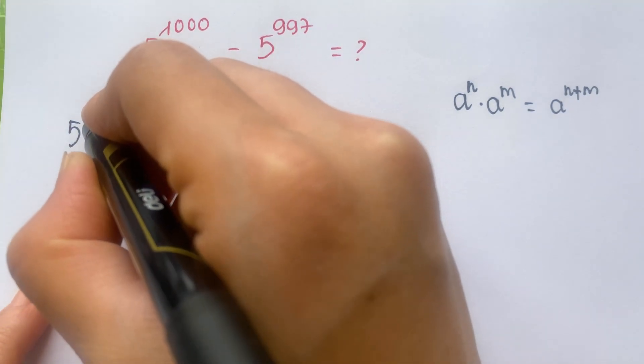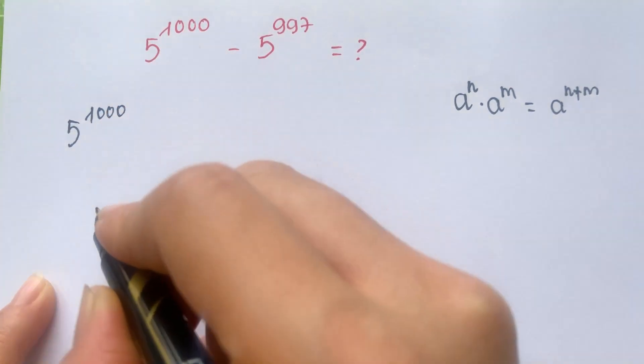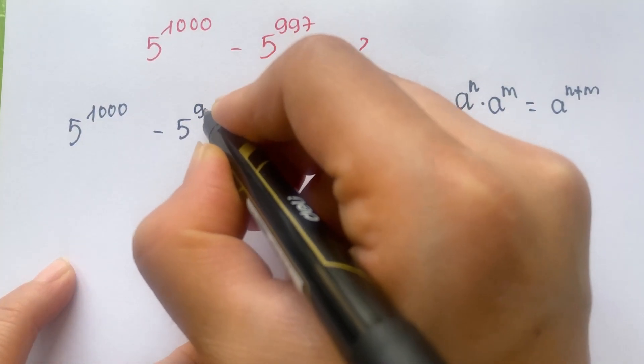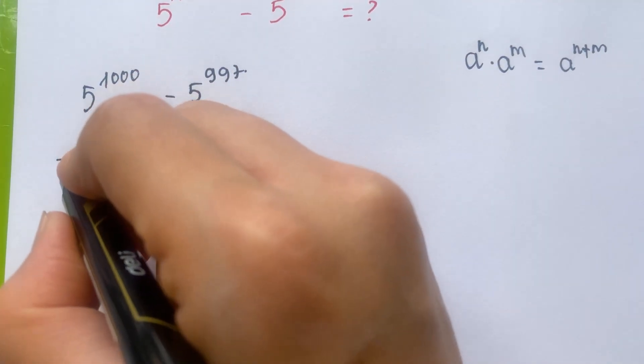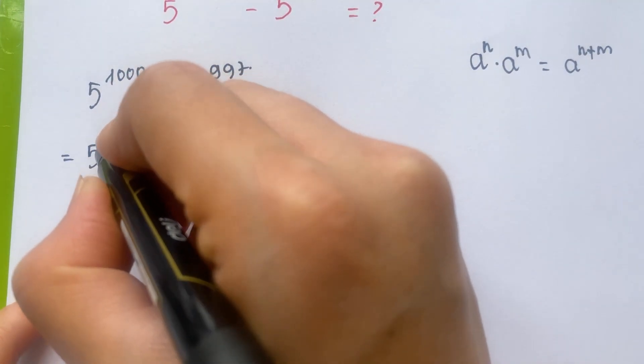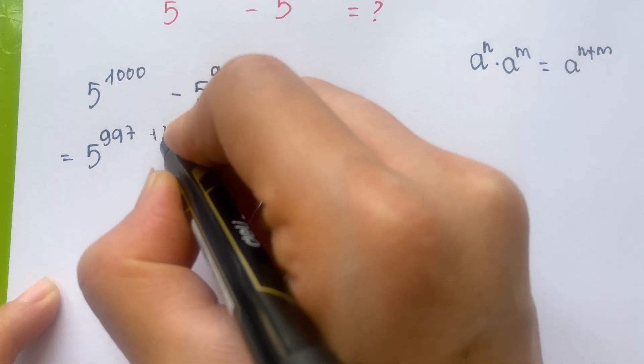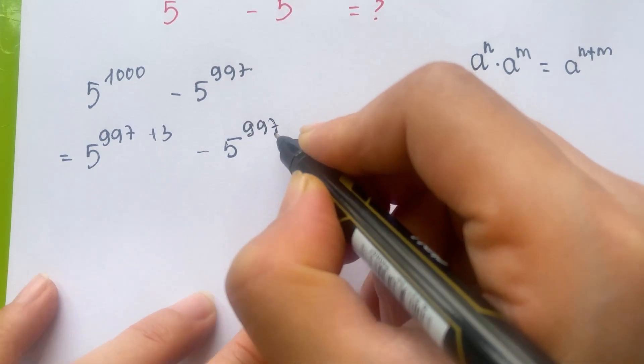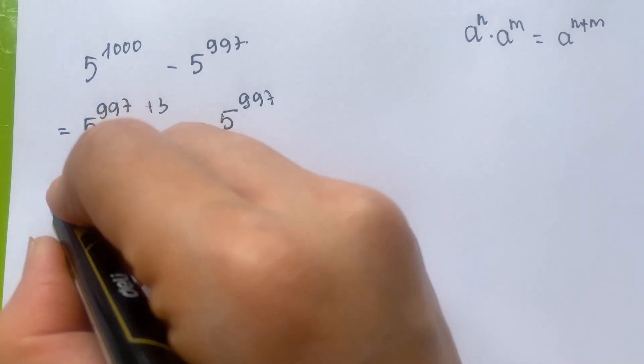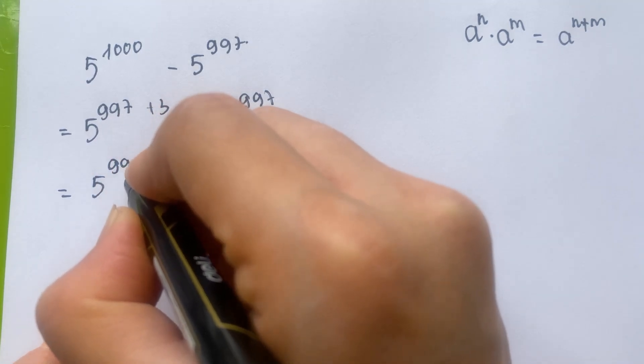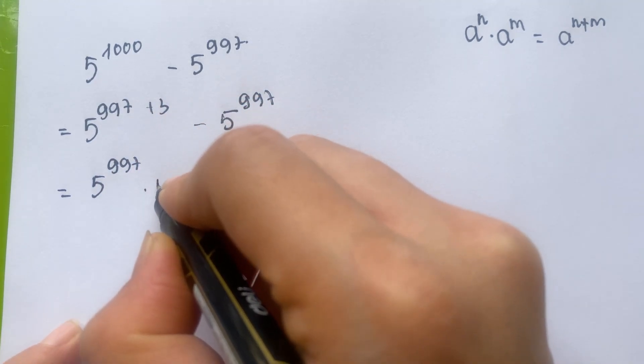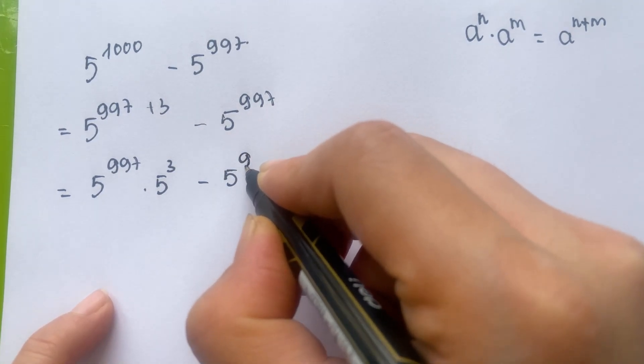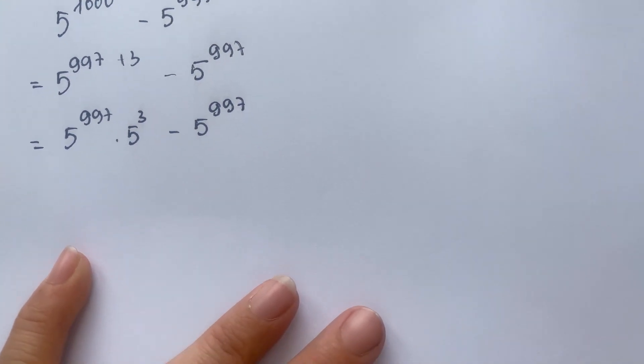5 power 1000 minus 5 power 997, you can rewrite 5 power 997 plus 3 and minus 5 power 997. It's also 5 power 997 times 5 to the power 3 minus 5 power 997, yes?